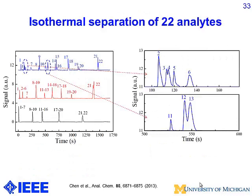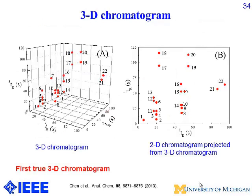Constructing the 3D chromatogram is straightforward: you record the first, second, and third dimensional retention times. For example, for peak number nine, you read its coordinates in first, second, and third dimensions directly from sensors after each column — no reconstruction required. You can project this 3D chromatogram onto any 2D plane you want. The huge peak capacity of 3D GC allows analysis of hundreds of analytes without needing a large GC, and all this can be done in a micro-GC format.